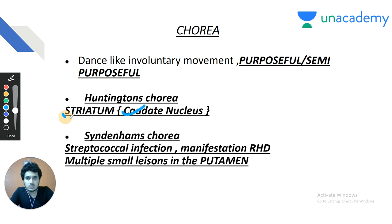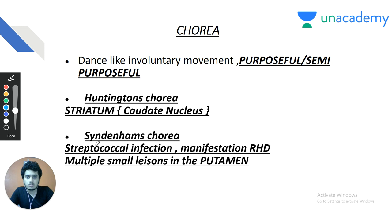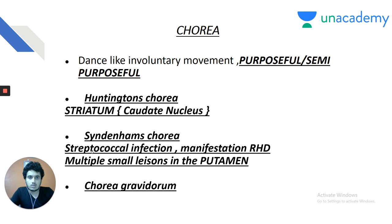Sydenham's chorea follows streptococcal infection and is a manifestation of rheumatic heart disease — one of the major criteria for diagnosis of rheumatic fever. Even a single case of Sydenham's chorea is sufficient to diagnose rheumatic fever, even without cardiac manifestations. Sydenham's chorea involves multiple small lesions in the putamen. The three types of chorea are Sydenham's (rheumatic), Huntington's (caudate nucleus, CAG repeats), and chorea gravidarum (pregnancy).